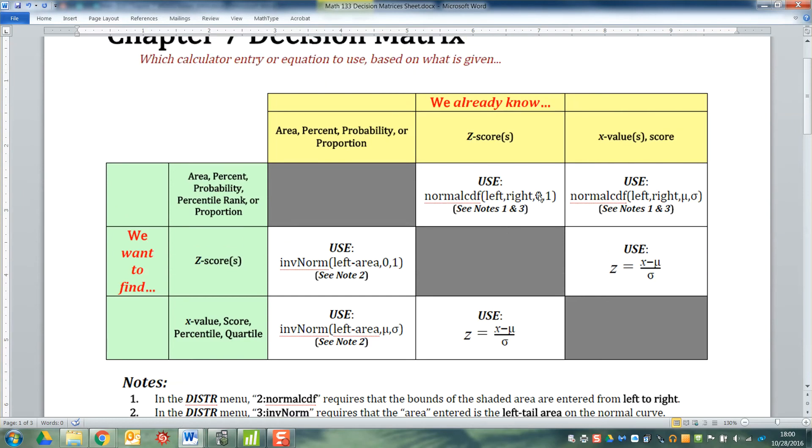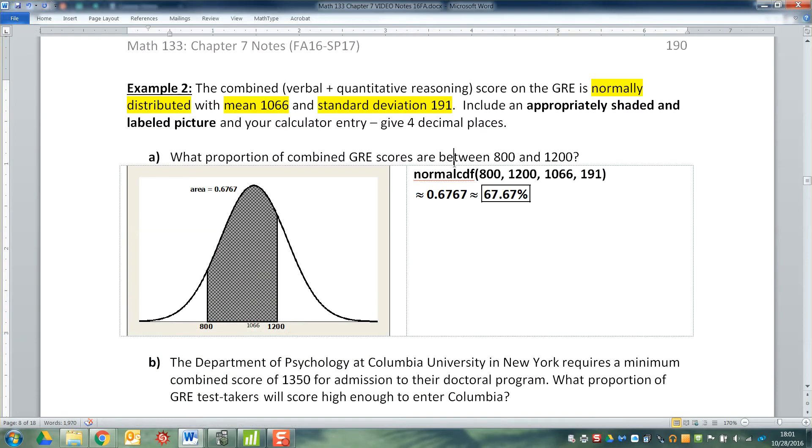So if I go to the decision matrix, I know the scores, the x values, right? As a matter of fact, I know one x value is 800 and I know the other x value is 1200, and I'm looking for a proportion. It says the word 'proportion' right in the problem, and if you look at the top row it says that word in there, proportion.